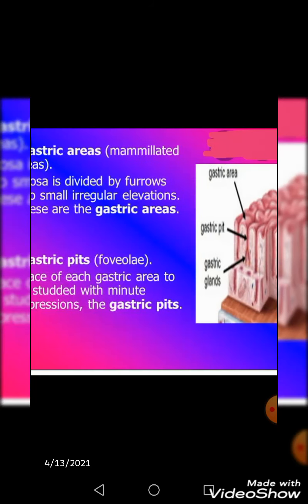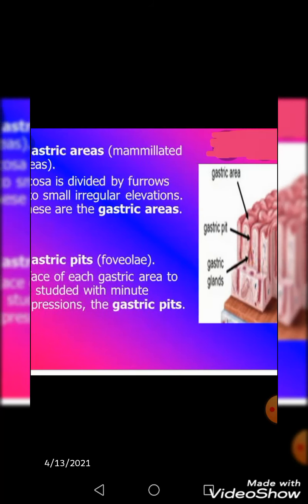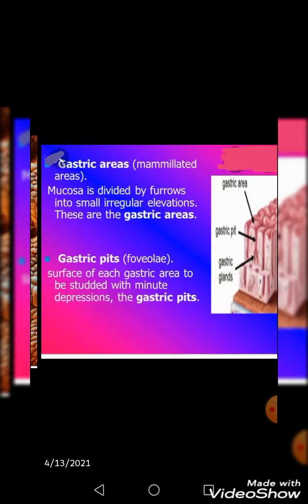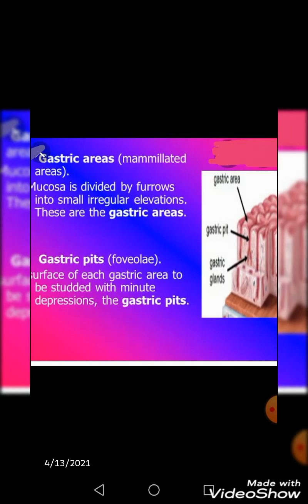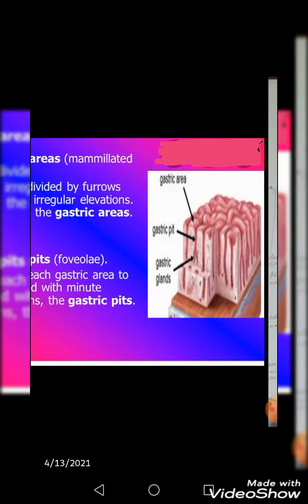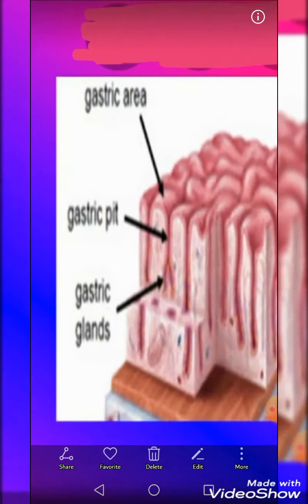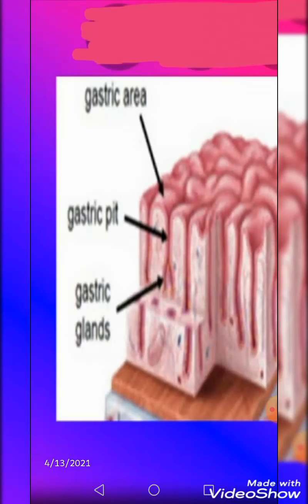Within the gastric areas you find smaller gastric pits, also called foveoli. These are the surface openings or mouths of each gastric area. They begin as minute depressions called gastric pits, which are essentially the mouths of the gastric glands embedded below.